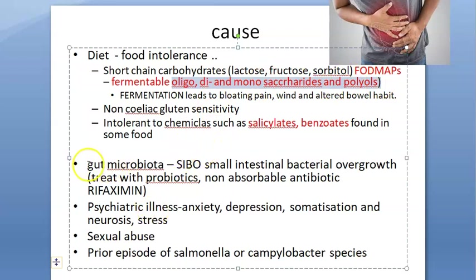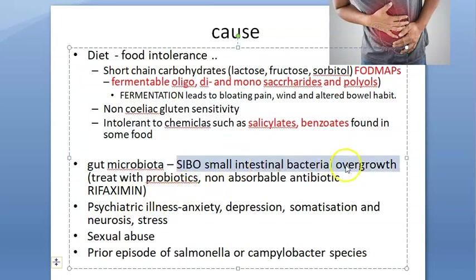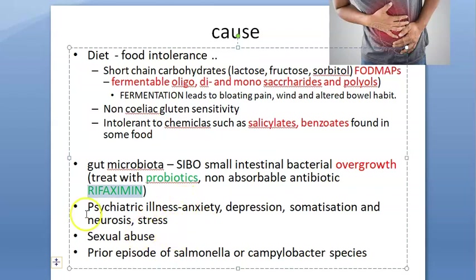The next factor to consider is gut microbiota. Bacteria in the small intestine can overgrow — this is called SIBO (small intestinal bacterial overgrowth). That is why you give probiotics and rifaximin, which is a non-absorbable antibiotic, to help the gut microbiota settle down and not overgrow.